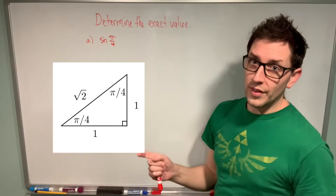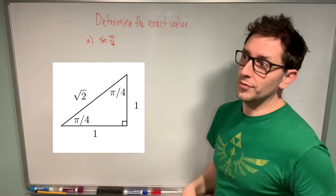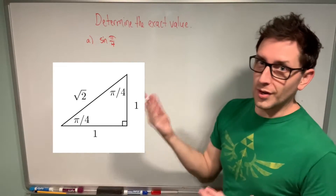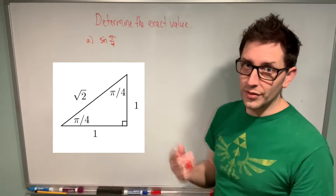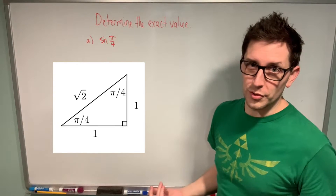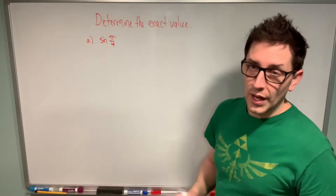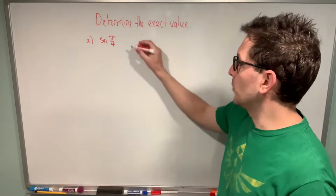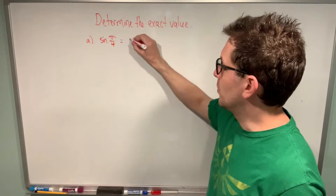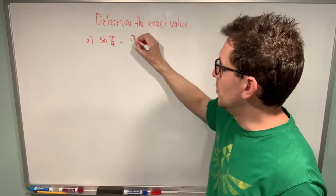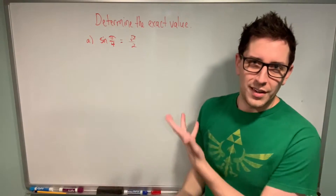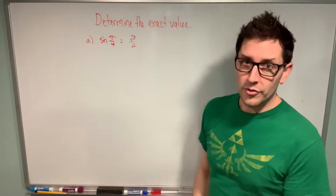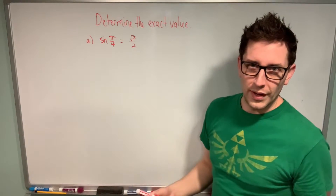You'll see that the sine of pi over four is just opposite over hypotenuse. Looking at this triangle, we can see that this could be one over root two. And you'll remember that sometimes we write that as root two over two, since we don't like to have roots in the denominator.